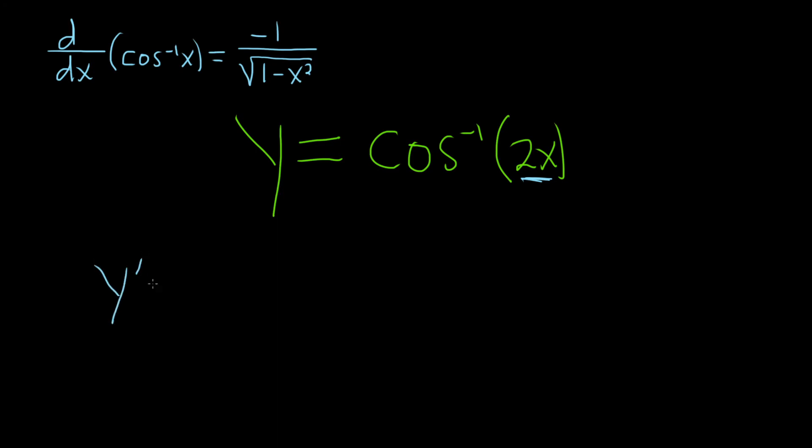So y prime is equal to negative 1 over the square root of 1 minus, and then instead of x, it's going to be 2x. So 2x and that's squared, times the derivative of the inside. So the derivative of 2x is 2.